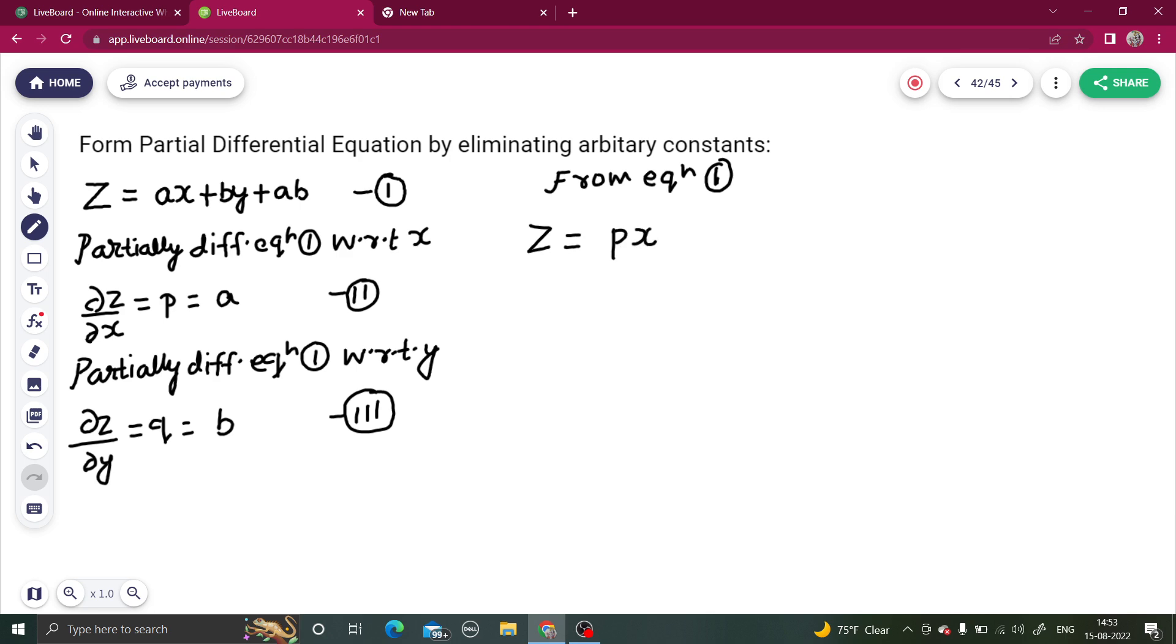So in first term that arbitrary constant is eliminated. In second term b can be replaced as q. So in second term also arbitrary constant is eliminated.